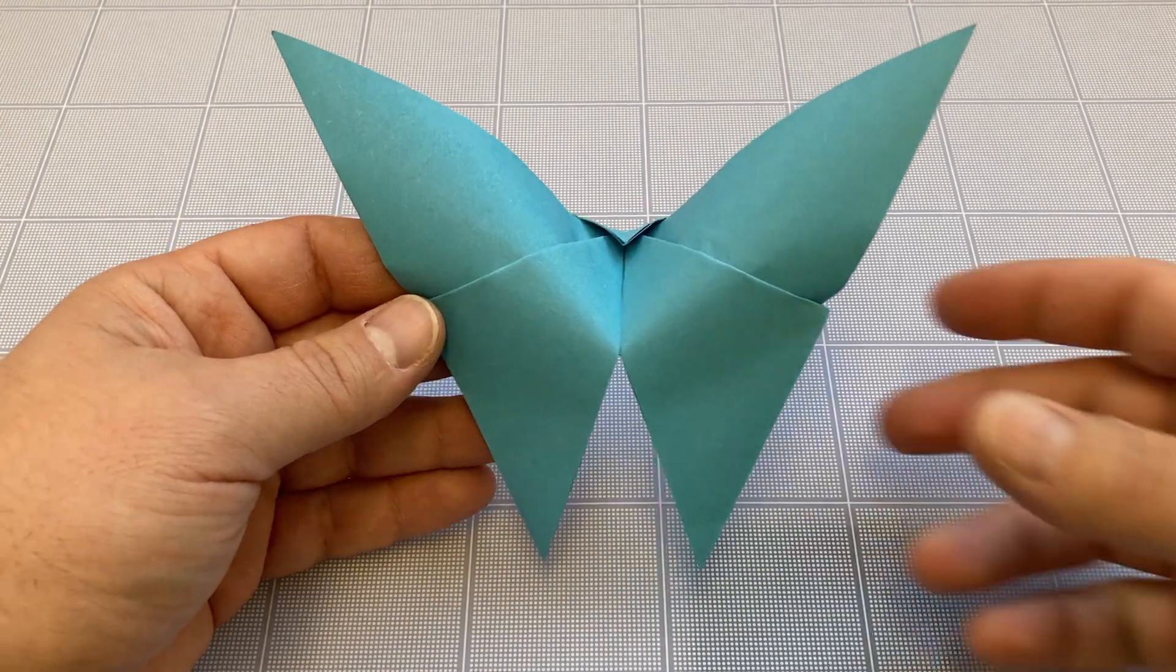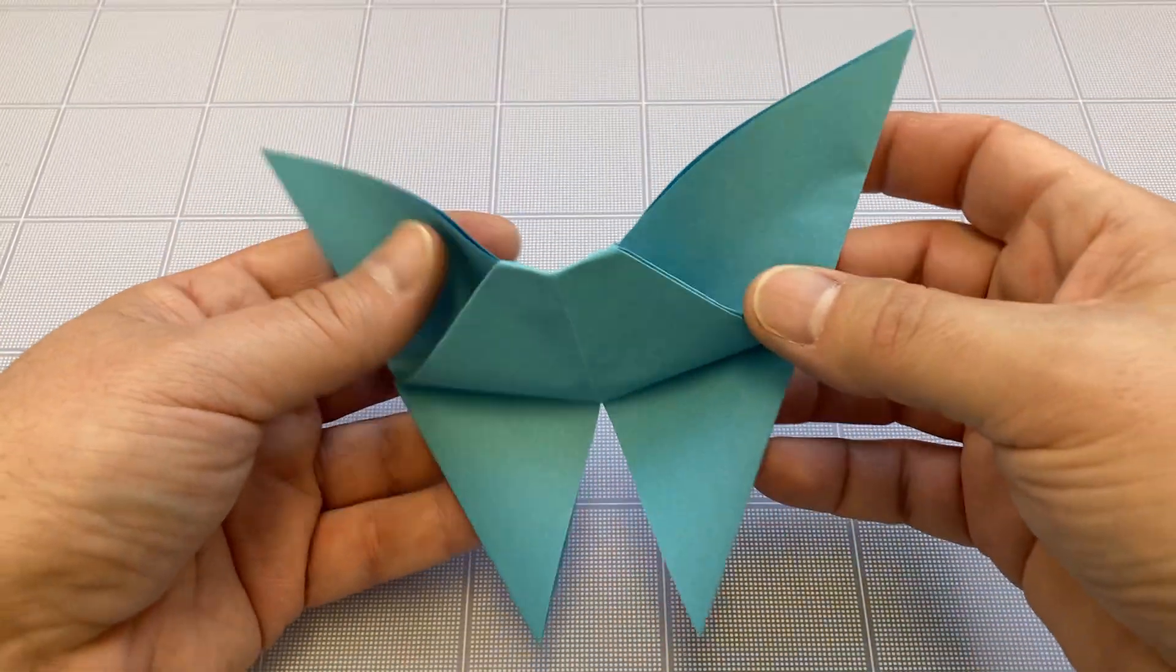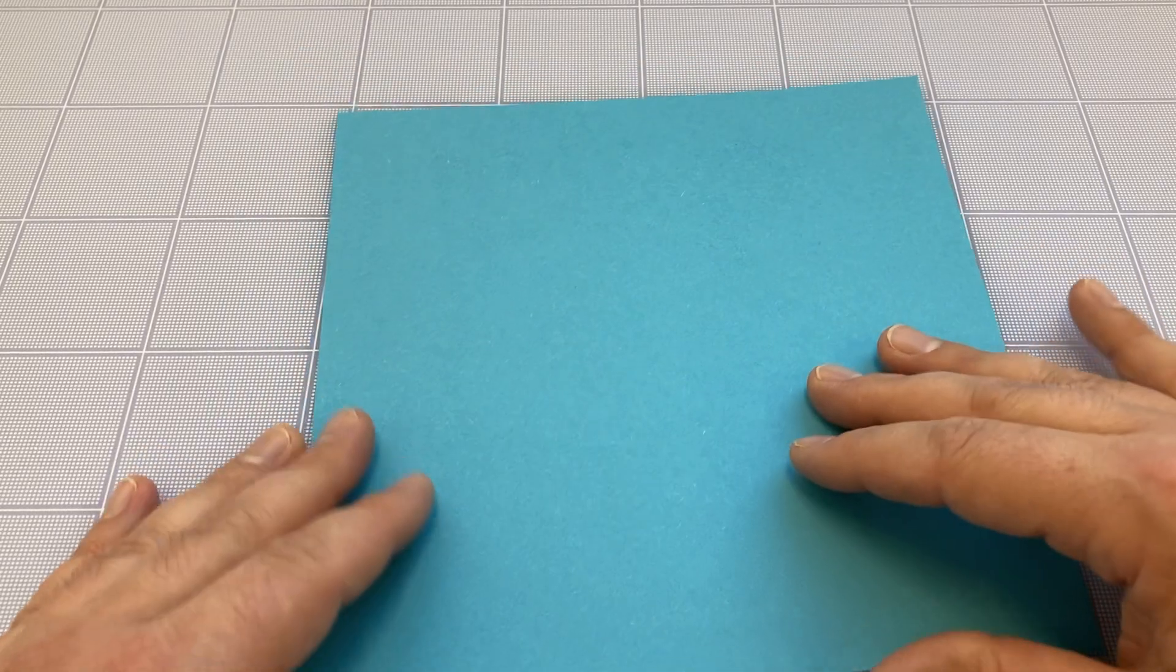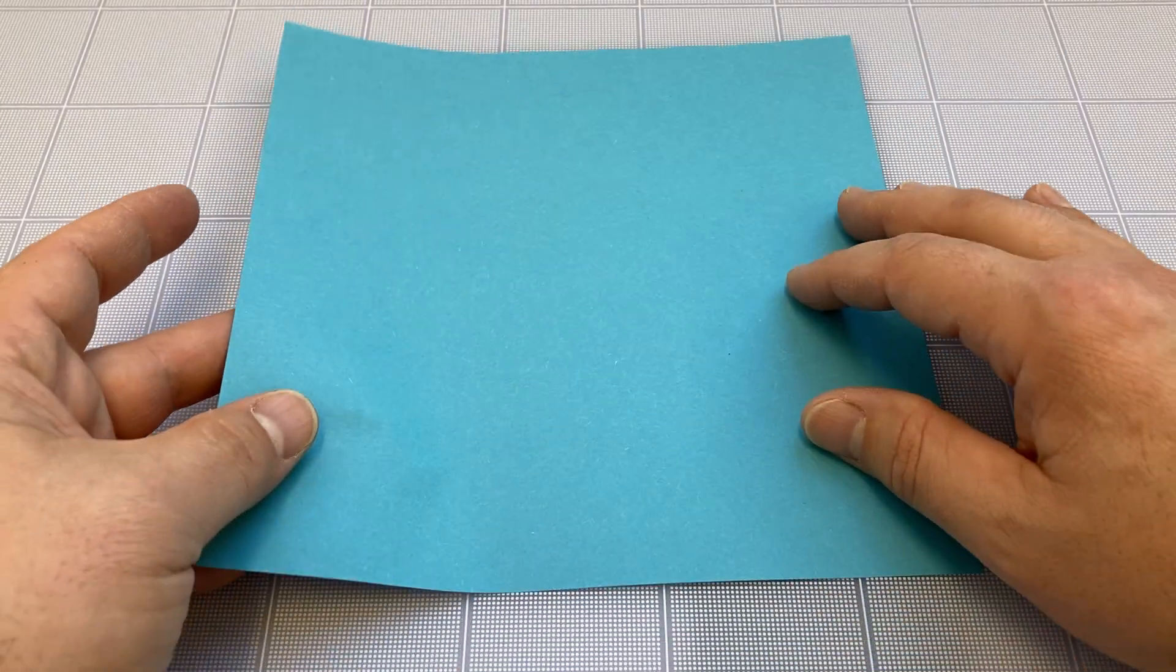Hi there, this is Andy T. I'm going to show you how to fold a very simple origami butterfly. Take a square of paper and we're going to create what's called the water bomb base.